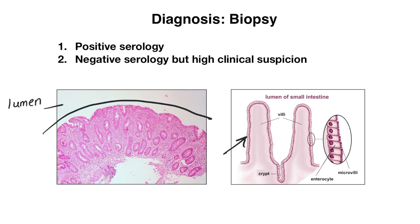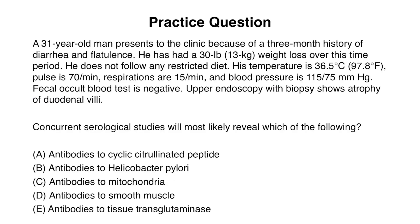Let's go over a practice question. A 31-year-old man presents with a three-month history of diarrhea and flatulence, and a 30-pound weight loss over this period. He does not follow any restricted diet and his vital signs are normal. A fecal occult blood test is negative, and an upper endoscopy with biopsy shows atrophy of duodenal villi. Concurrent serological studies will most likely reveal which of the following? This is a two-part question asking you to identify the diagnosis and the likely lab results.